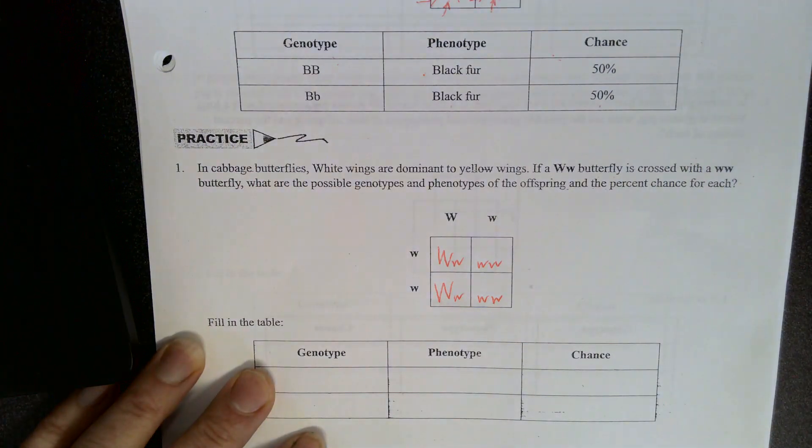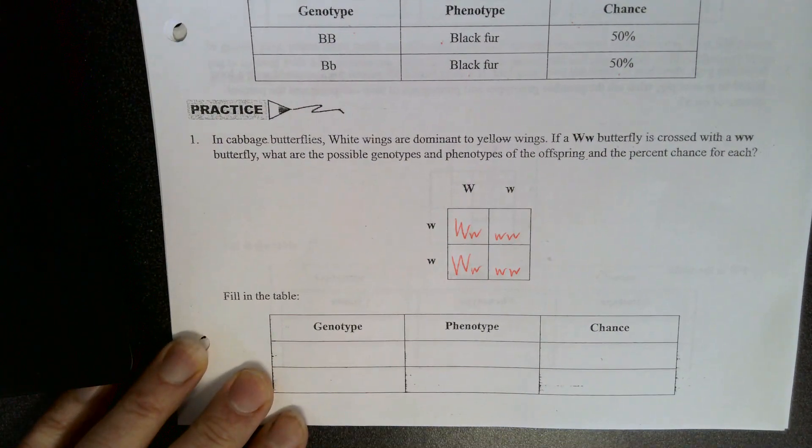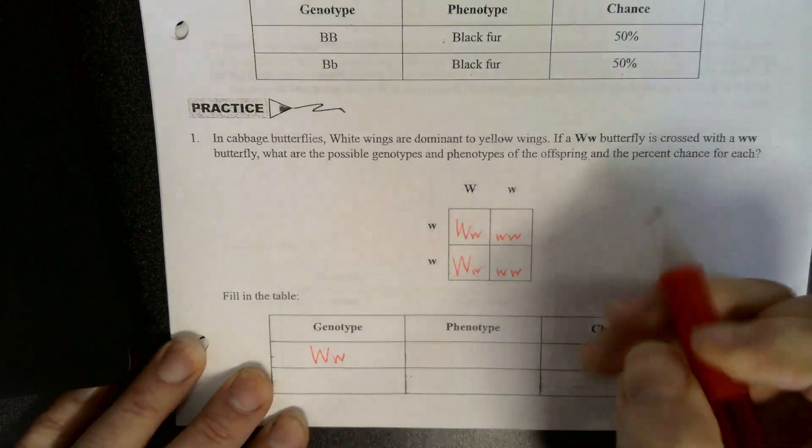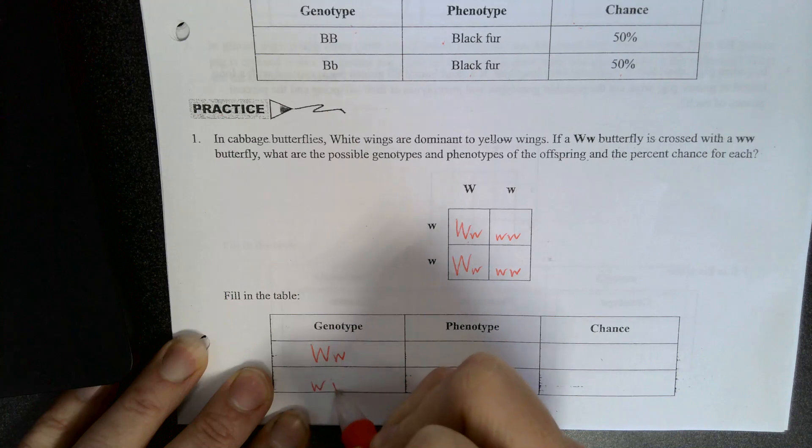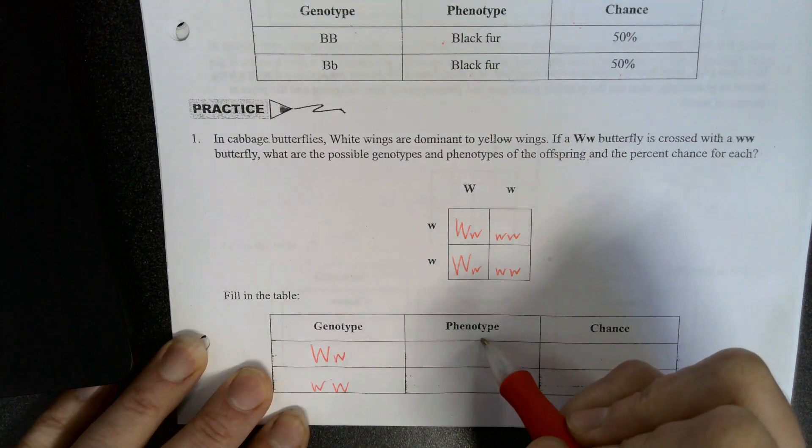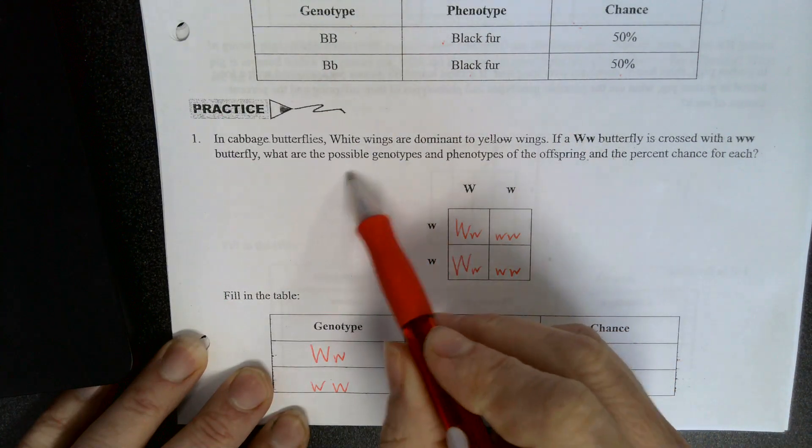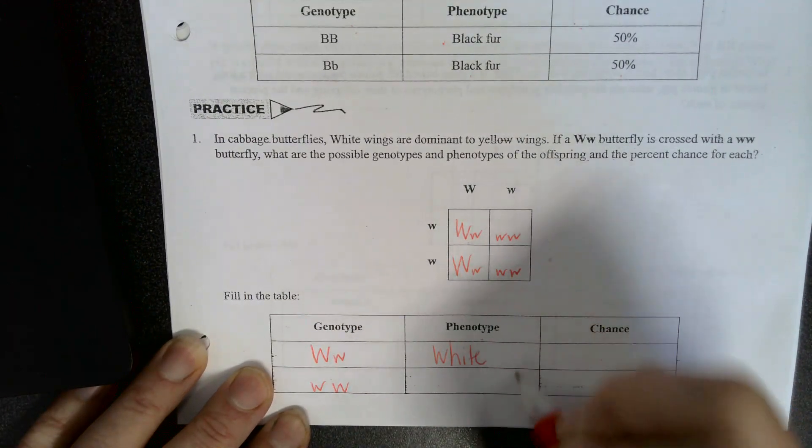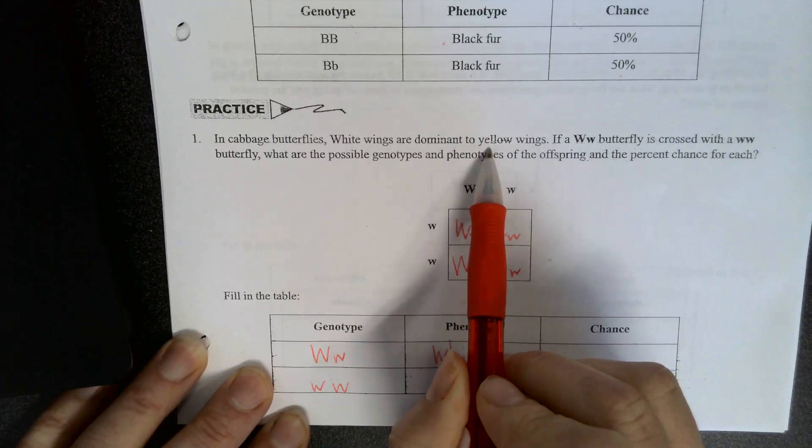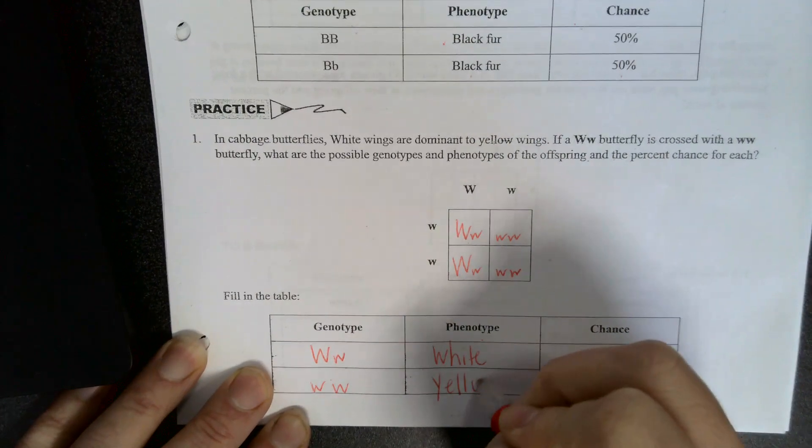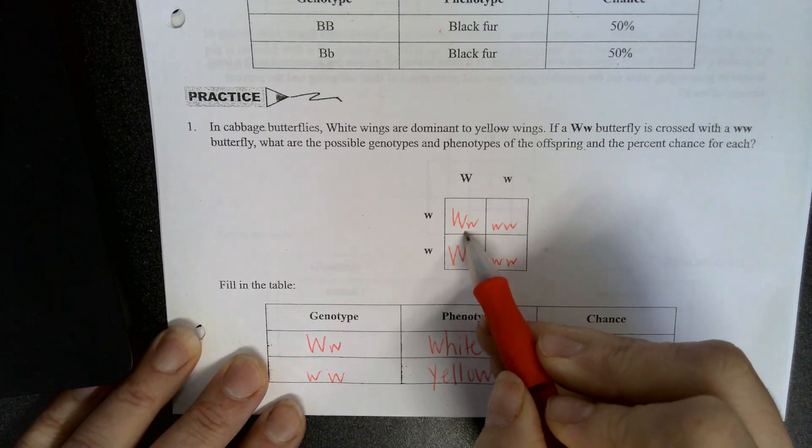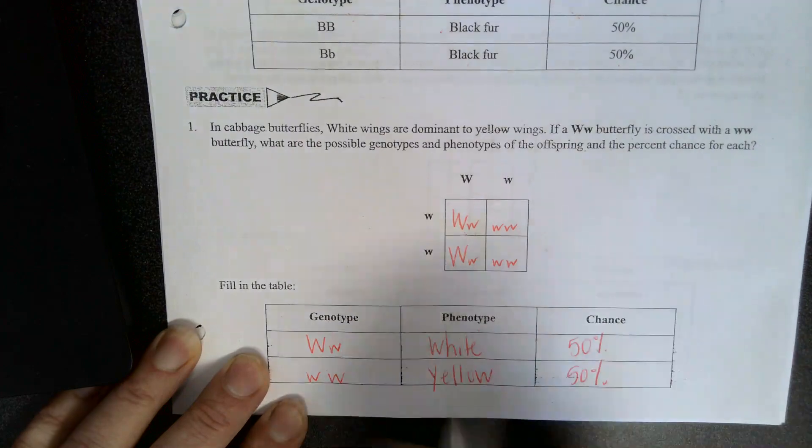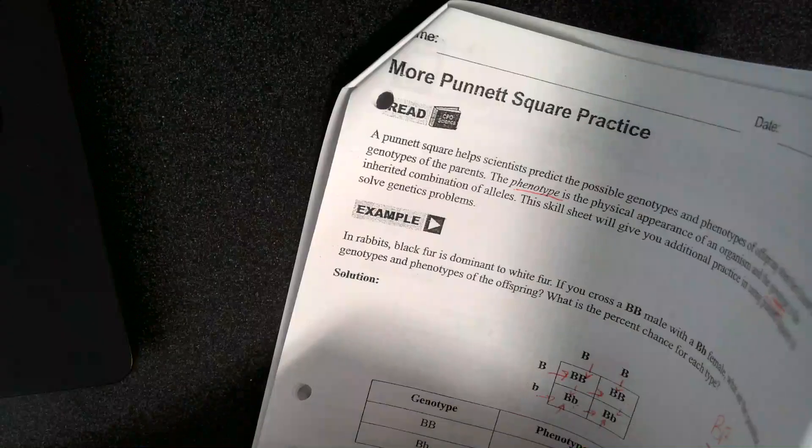Okay, did you get it right? What does this mean? Well, what are our genotypes? So we've got big W, little W, and we've got little W, little W. So what does big W, little W mean? White wings, dominant. What does little W, little W mean? Yellow. What are your chances? Two out of four. Two out of four. Let's try another one.